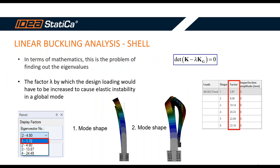The linear buckling analysis mathematically solves an eigenvalue problem. The equation involves the stiffness matrix and the geometric stiffness matrix to find a lambda factor — the critical factor — by which the design loading would have to be increased to cause instability. Comparing RFEM (left) with IDEA StatiCa Member (right), the factors differ slightly because Member uses shell elements and also captures warping, resulting in a slightly increased critical factor.